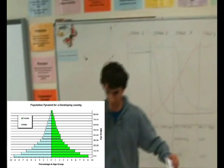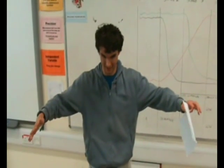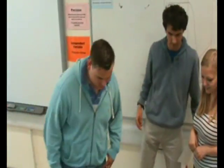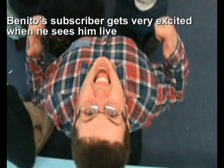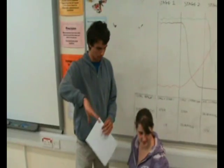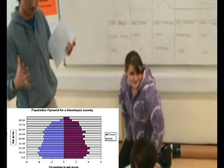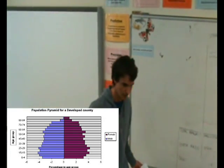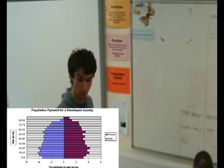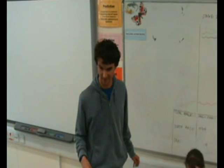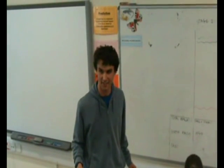Now we're going to do a decreasing population — we're basically going to be in a straight line. As you can see, with more older people and fewer younger people, there's a higher death rate and not a balance as in the first pyramid. There are more older people dying and fewer births, so we have an aging population. Overall, as there are fewer young people being born, the population is going to decrease. That's a decreasing population for you — subscribe!